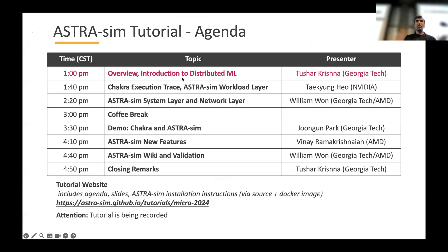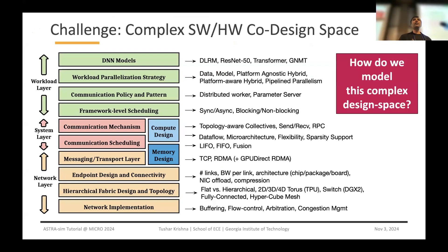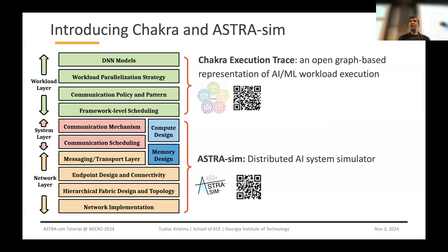Continuing on the overview, now that I've set the context for distributed machine learning systems and given a quick preview of the entire design space, our goal now is really to try to model this design space. That's the goal of this entire infrastructure. The question is how do we model this complex design space where each component has several design decisions. We've been actively participating in two such efforts to model this design space.